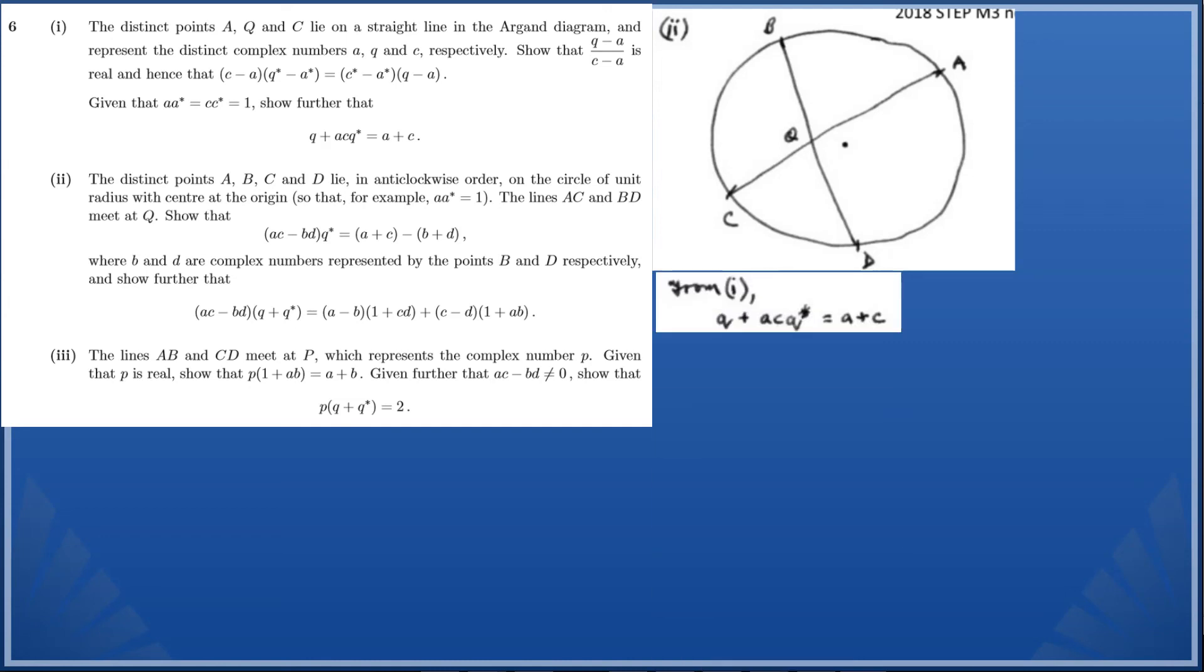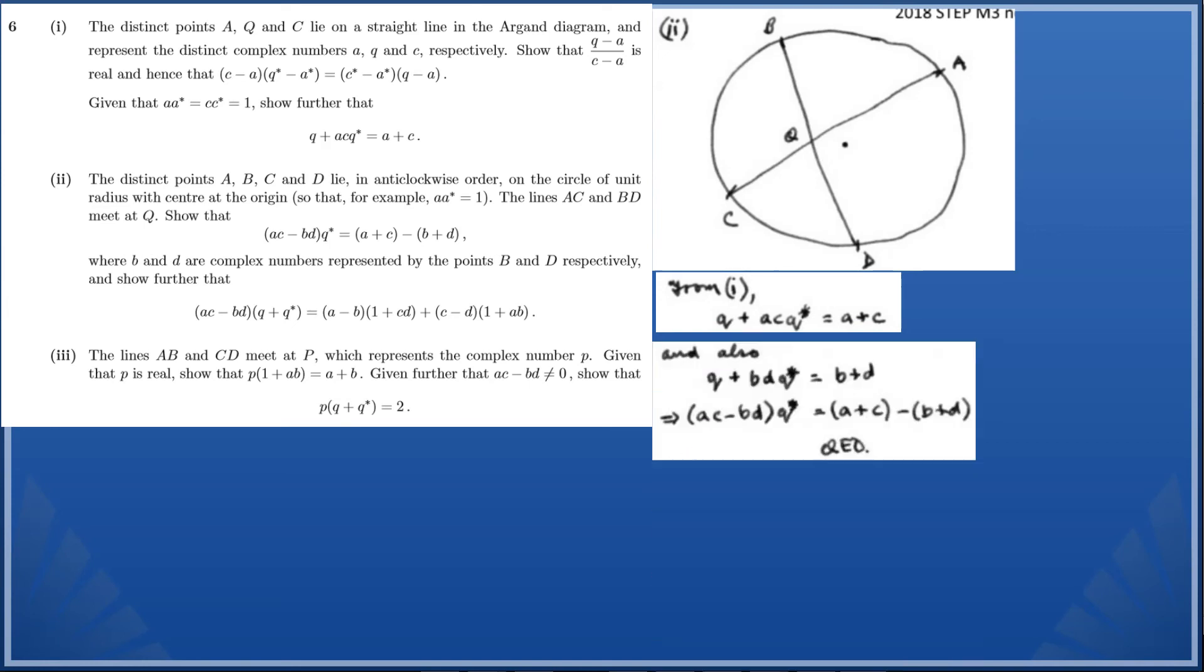Let's focus on the first part first. We know from part 1 we've already proven this result: q + acq* = a + c. And we also know that q + bdq* = b + d. So this implies that (ac-bd)q* = (a+c)-(b+d). There you have it, we have shown our result.